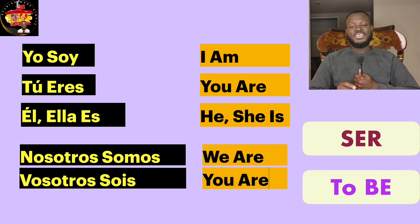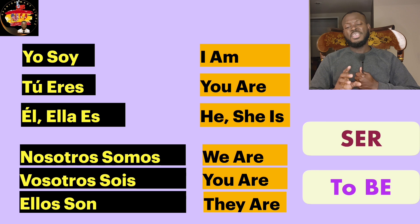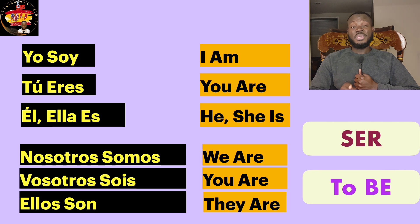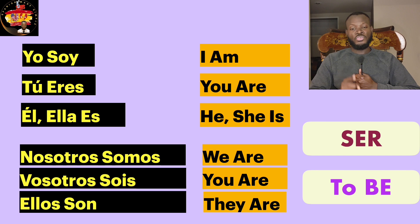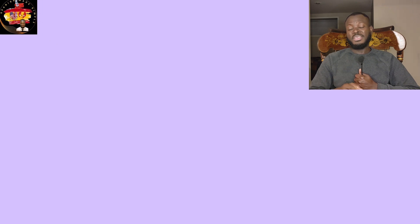'Vosotros sois' — you are. 'Ellos son' — they are. Be careful: in Latin America they don't say 'vosotros sois' — nobody uses it there. But I'm not teaching you Latin American Spanish, I'm teaching you real Spanish. So you have to know it and use it, because you cannot use one personal pronoun for another — it's completely incorrect.